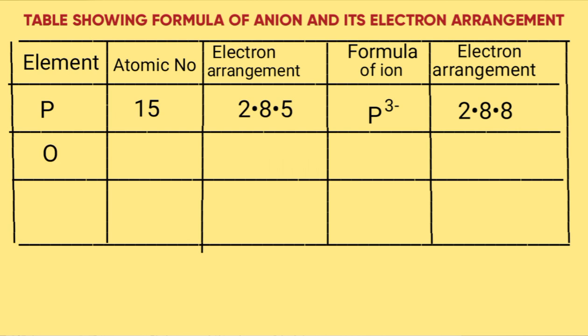Oxygen, atomic number 8, has a configuration of 2.6, gains 2 electrons. The formula becomes O^2- and its configuration is 2.8.8.